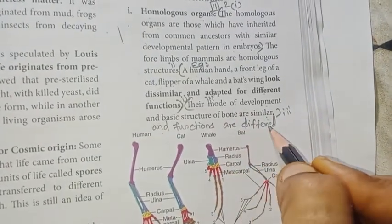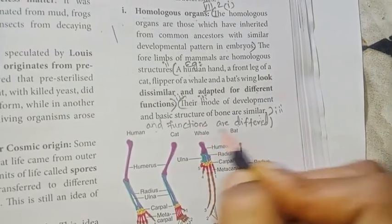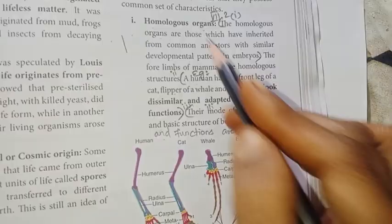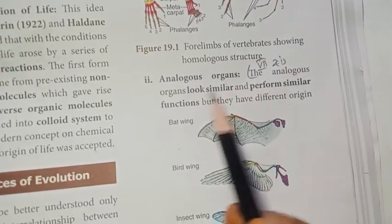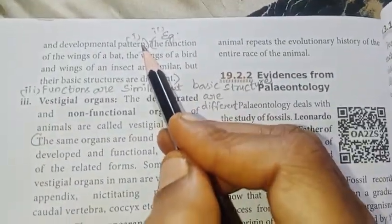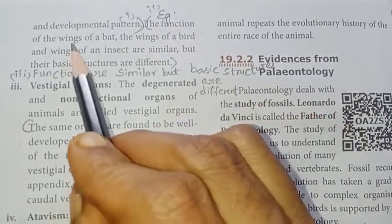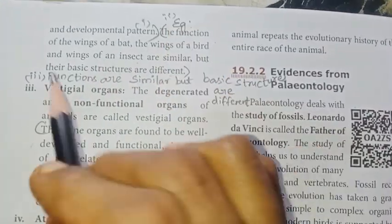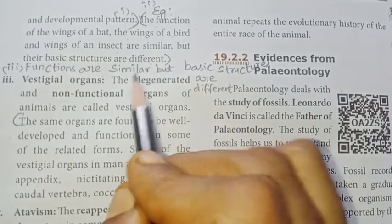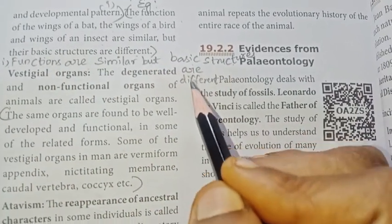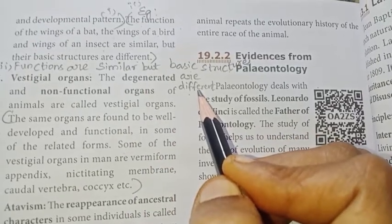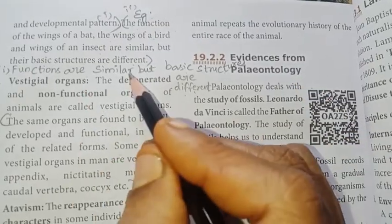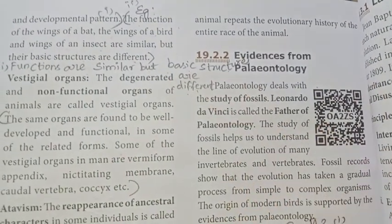The mode of development and basic structure of bones are similar in homologous organs. Analogous organs look similar and perform similar functions but have different origin and developmental pattern. Example: the wings of a bat, wings of a bird, and wings of an insect are similar in function but their basic structures are different.